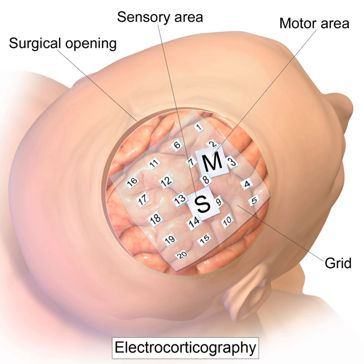Direct Cortical Electrical Stimulation, also known as cortical stimulation mapping, is frequently performed in concurrence with ECoG recording for functional mapping of the cortex and identification of critical cortical structures. When using a crown configuration, a handheld wand bipolar stimulator may be used at any location along the electrode array. However, when using a subdural strip, stimulation must be applied between pairs of adjacent electrodes due to the nonconductive material connecting the electrodes on the grid.